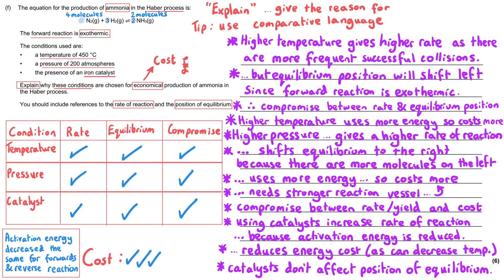And you probably don't need to have a tick in every single row for temperature and pressure and catalyst. You just need to make sure you've got ticks in each row and ticks in each column. And absolutely that you've mentioned cost because they've asked us about the economic production of ammonia.